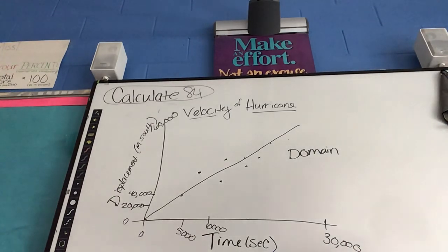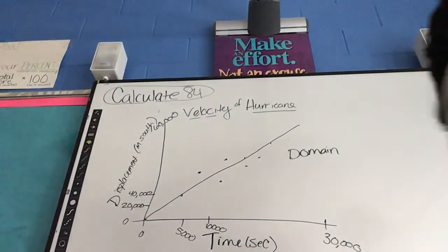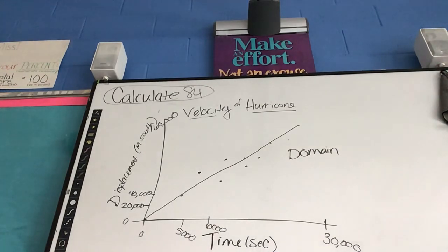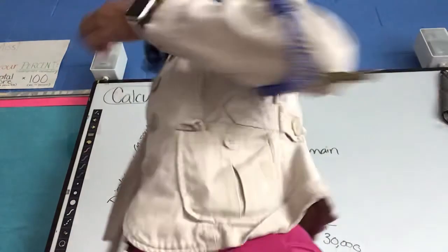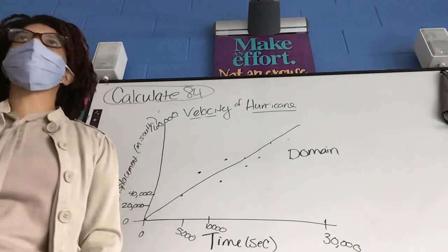How do we write that one sentence? Ready for that one sentence? My domain is my time in seconds from zero to 30,000. Another way you can say that is my domain of the velocity of the hurricane was from zero to 30,000 seconds.